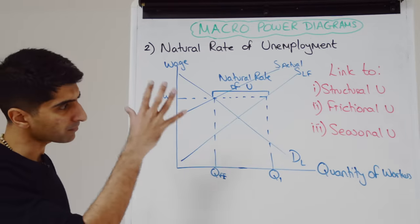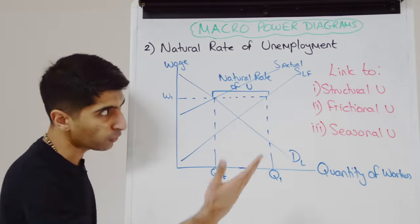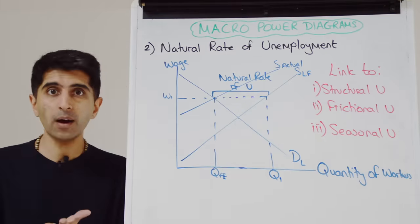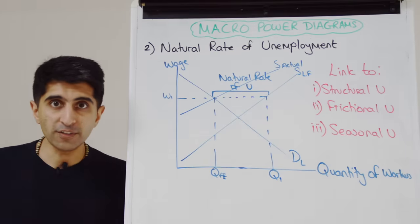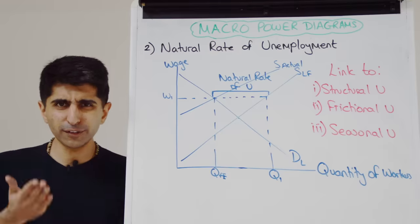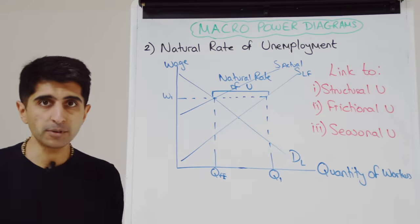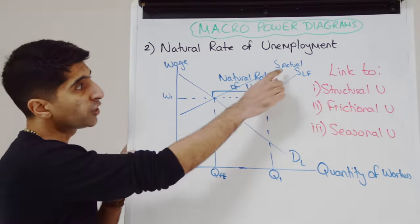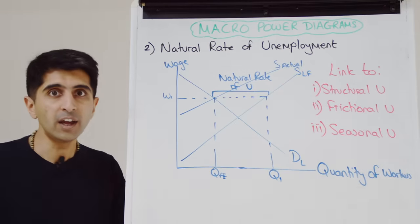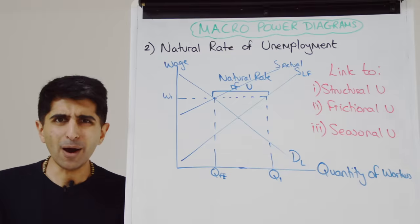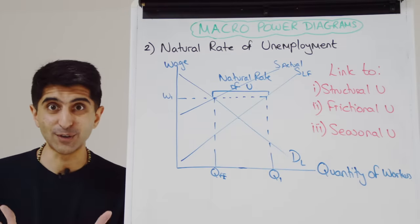So this is your natural rate of unemployment diagram — your structural unemployment diagram, your frictional unemployment diagram. But also, you can show the impact of successful policies to reduce structural and frictional unemployment, which will shift the actual supply curve to the right towards the labour force supply curve. It's a powerful diagram not many students know exists, but it's going to score you big marks if you can use it well.